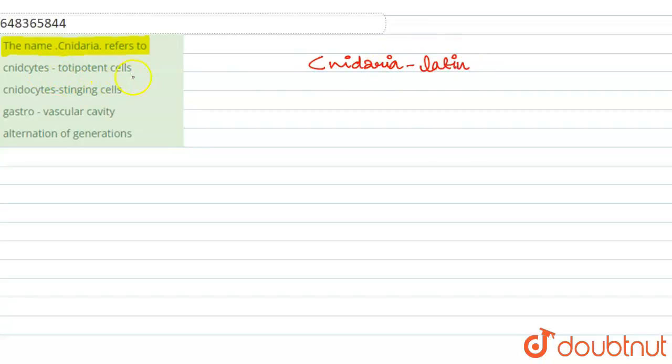Let us look at the options. Cnido-sites. Cnido-sites totipotent cells. This is an incorrect option. Cnido-sites are not totipotent cells, but actually they are the stinging cells or the stinging capsule, stinging cells slash capsules.